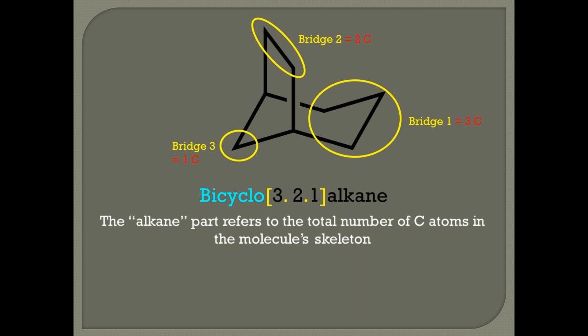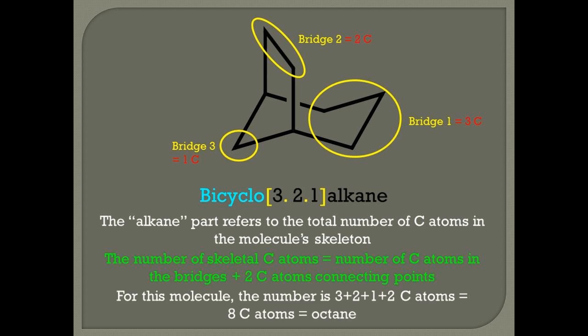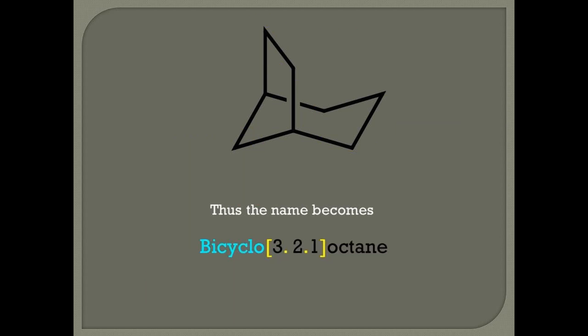Well, what is alkane? Alkane is the total number of carbon atoms in the molecule, which is equal to the sum of the bridges, plus two carbon atoms for the connecting points. Therefore, it's eight carbons and it's octane. Thus, the name becomes bicyclo[3.2.1]octane.